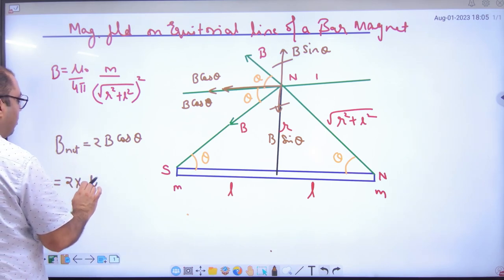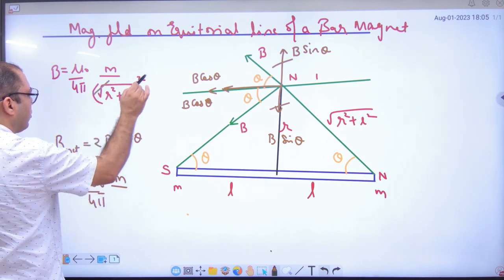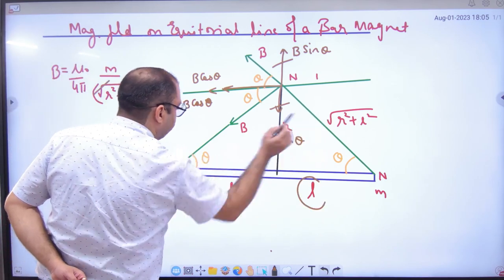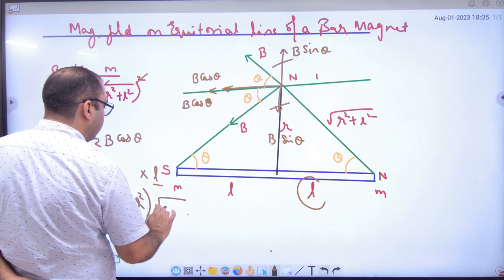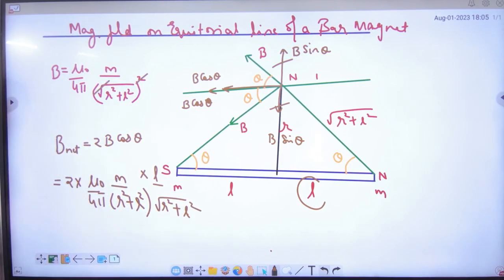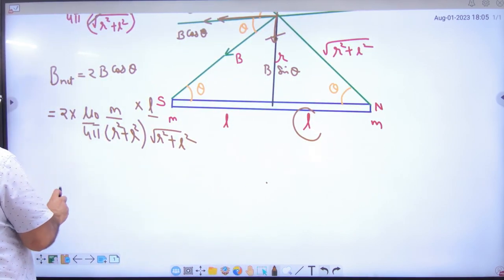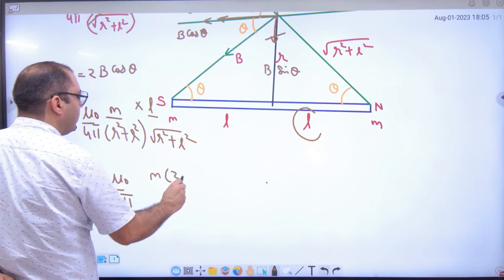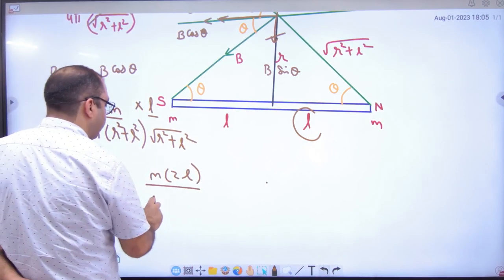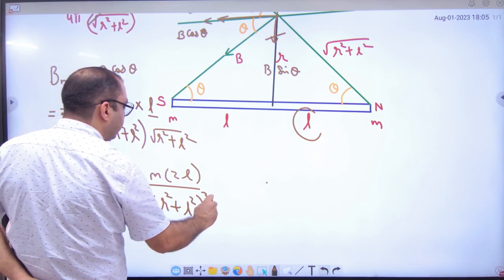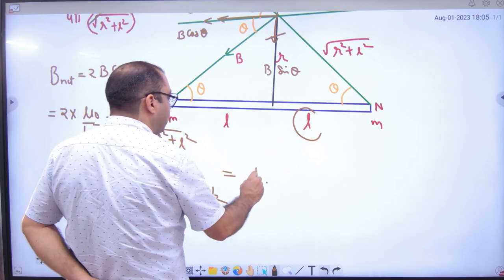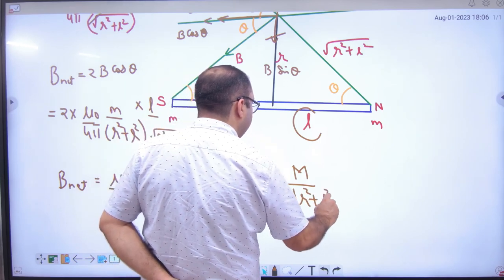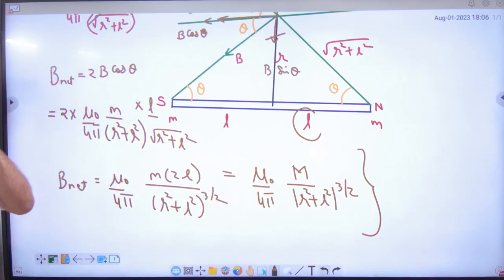Now 2 into B, we have to remove mu0 by 4pi. M divided by under root of R square plus L square. And cos theta value is what will happen here? What will happen here? L divided by this term. That is L divided by under root of R square plus L square. So here, if you multiply it here, then net B value will be mu0 by 4pi into small m into 2L. This 2 multiplied by 2L divided by R square plus L square raised to power 3 by 2. But small m into 2L, what will happen here? Capital M. So mu0 by 4pi. Capital M divided by R square plus L square raised to power 3 by 2 is the answer. Formula booklet in this formula. Note that. Okay?